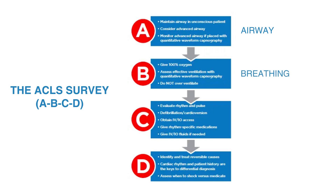B stands for breathing. In cardiac arrest, administer 100% oxygen. Keep blood oxygen saturation, or SATs, greater than or equal to 94% as measured by a pulse oximeter. Use quantitative waveform capnography when possible. Normal partial pressure of carbon dioxide is between 35 to 40 mmHg. High-quality CPR should produce an ECO2 between 10 to 20 mmHg. If the ECO2 reading is less than 10 mmHg, confirm the quality of CPR and placement of advanced airway.